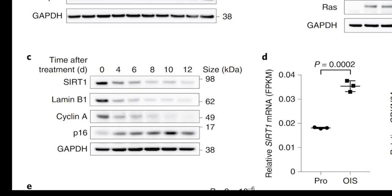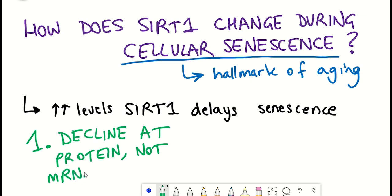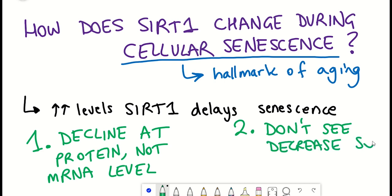The two important things to take from this are: firstly, the SIRT1 decline occurs at the protein level, not at the mRNA level, which suggests that the protein is being degraded. Secondly, this decline in SIRT1 was not seen in quiescence. So what was causing SIRT1 to get degraded?